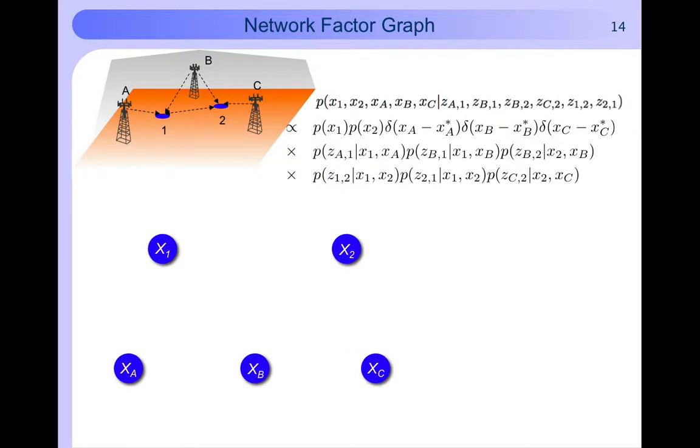The important thing is that from this factorization we can draw the factor graph. First we draw the variable vertices corresponding to the positions of every node. Then in pink we have the a priori distribution of every node. For the agents this distribution could be uniform, for the anchors they could be direct delta functions.